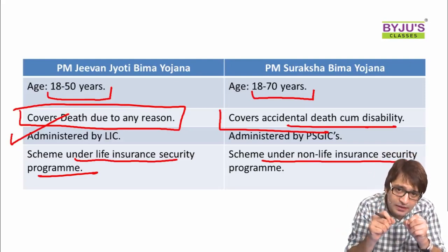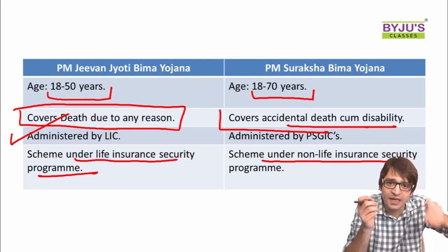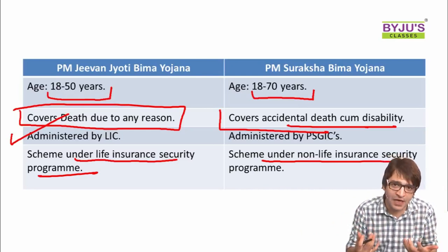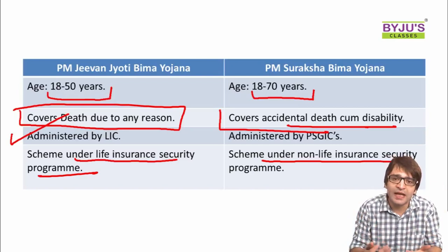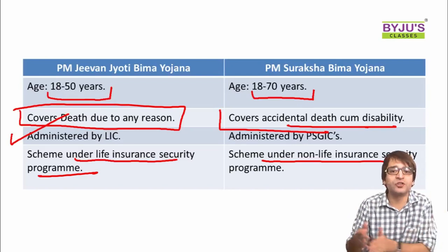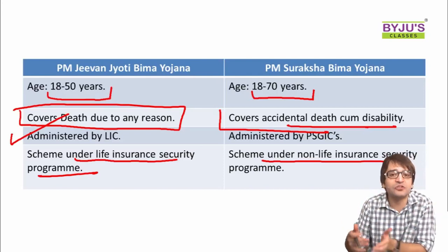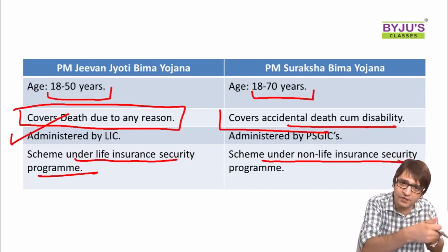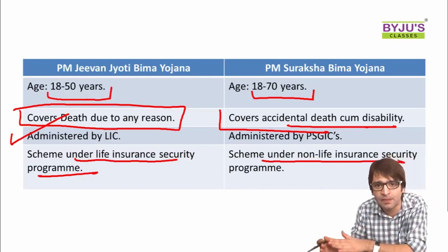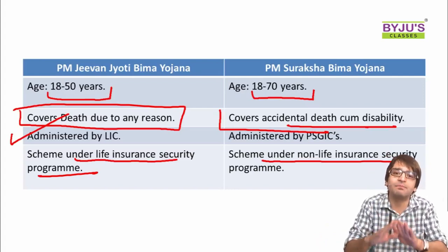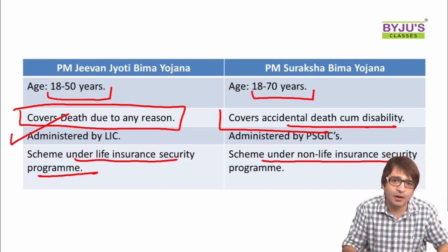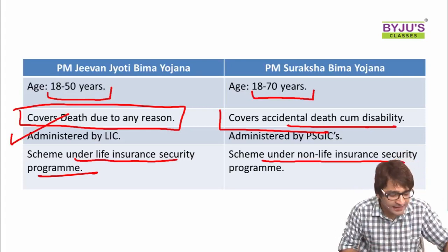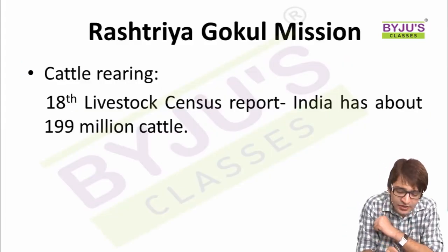To summarize this lecture so far: we discussed Sansad Adarsh Gram Yojana, then three Jan Suraksha schemes — two insurance schemes (PMJJBY and PMSBY) and one pension scheme (Atal Pension Yojana). Now let's talk about the fifth important scheme: Rashtriya Gokul Mission.